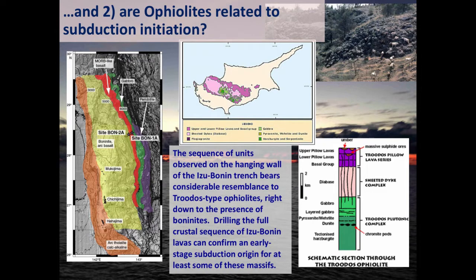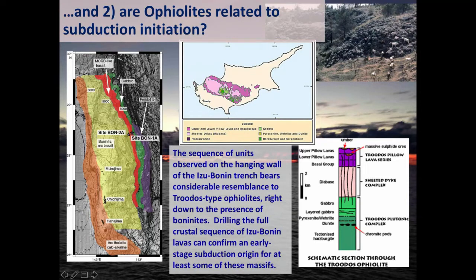The second big question relates to connecting what is happening today in the Izu-Bonin system to what may have happened in other subduction systems around the world in the past — specifically the similarities between what we see on the ocean floor near the trench and what we encounter in unique rock assemblages in mountain belts called ophiolites. An ophiolite is a vertically stacked sequence of rocks: mantle-derived rocks at the bottom, cumulate gabbroic rocks overlying that, then a complex of basaltic or diabasic dikes believed to be feeder dikes, feeding up into lavas that are pillowed or sheet flows, suggesting they were erupted underwater.